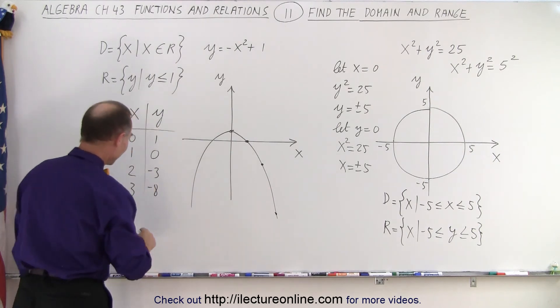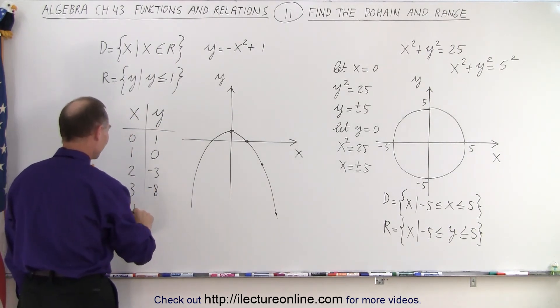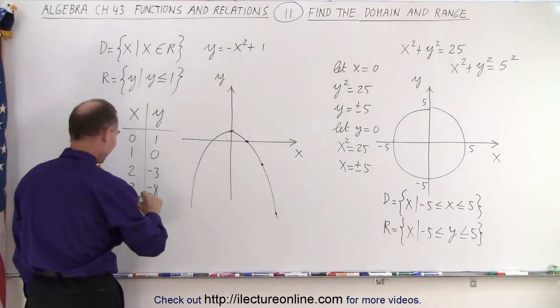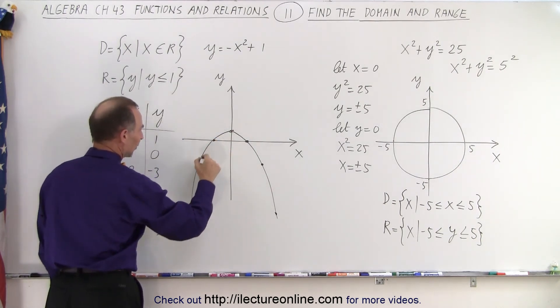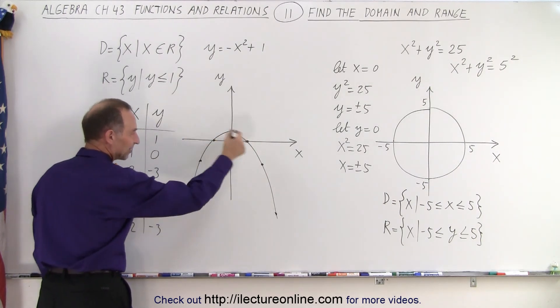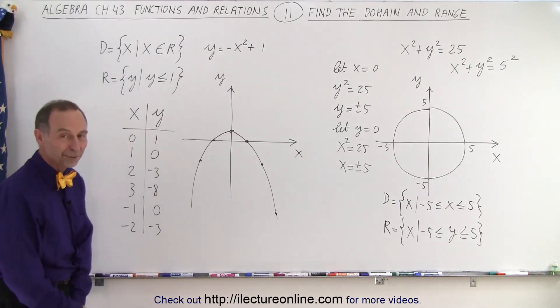And then you go in the other direction. And then you go x equals negative one. And negative one, you get the same value. You get y equals zero. And negative two, you get negative three. So on the other side, you get this point. You get this point. And then you collect the dots. And you realize what you're dealing with.